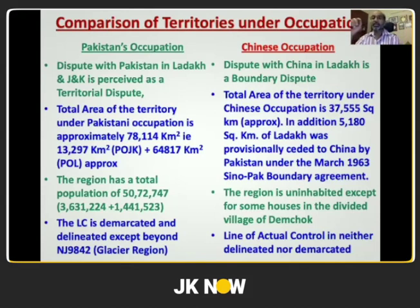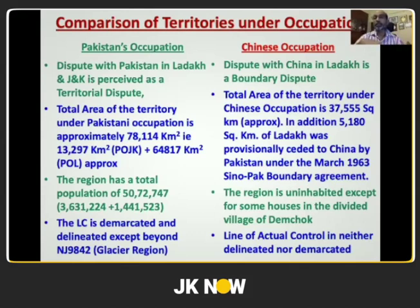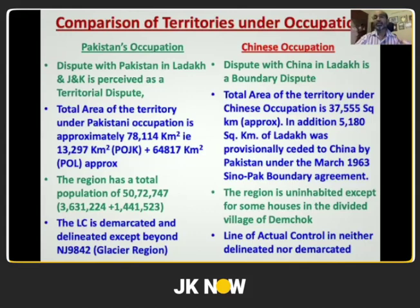With China, the line of actual control is neither delineated on map nor demarcated on ground. As a result, there are different perceptions — we believe the line of actual control passes through one area, they believe it passes through another. This leads to overlapping patrols, skirmishes, and tensions. After so many decades, we have had loss of lives and open confrontation.